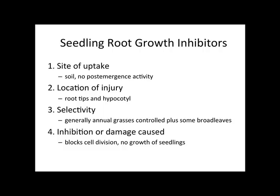Seedling root growth inhibitors — how do they kill the weed? Site of uptake: they are in the soil, with no post-emergence activity. Location of injury is the root tips and hypocotyl. Selectivity: generally annual grasses controlled, plus some broadleafs. Inhibition or damage caused: blocked cell division, so no growth of the seedling.